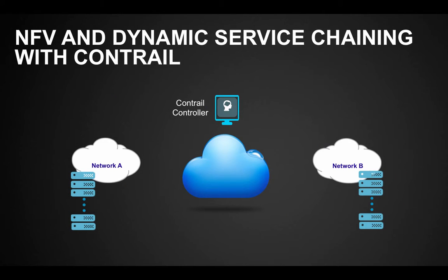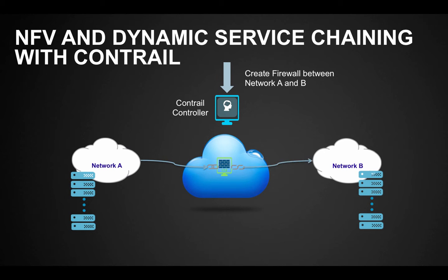Contrail exposes RESTful northbound APIs to cloud orchestration platforms or operational and business support platforms to receive service creation commands. It then spins up one or more virtual machines on standard servers running software images of relevant network functions. Contrail vRouter runs alongside hypervisors on these servers and communicates with the Contrail controller to dynamically set up overlay tunnels to route traffic between the designated networks through the newly created service.